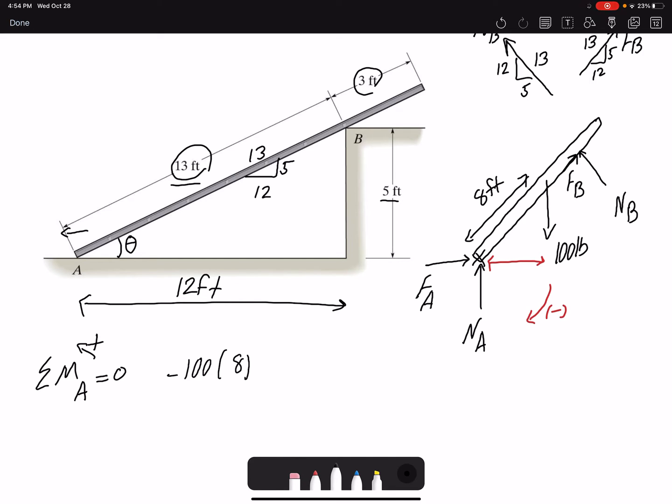If I multiply it by 12 over 13, I will get the horizontal component or the horizontal distance, and that would be the moment arm. Then I have N_B, which is perpendicular, so the perpendicular distance or the moment arm would be 13 feet. So one equation, one unknown. I can find N_B.